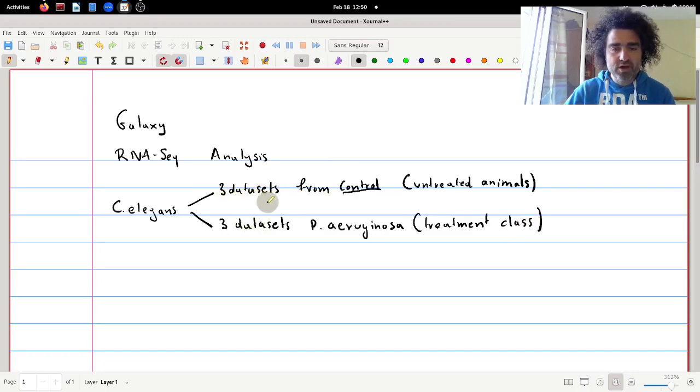Three from one class and three from another class. The first class contains animals that are treated as control, which means that they don't have actually any treatment. They are just healthy C. elegans. And the other three animals are those that are infected, I guess by a bacterium here, and it's the treatment class.